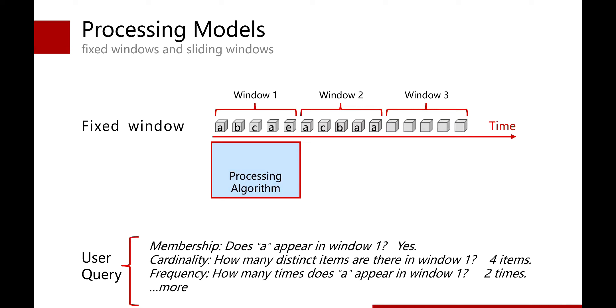There are two common stream processing models, the fixed-window model and the sliding-window model. First, we show how fixed-window model works. The fixed-window model divides the data stream into multiple windows of the same size, processes each window independently, and reports the results only at the end of each time window.